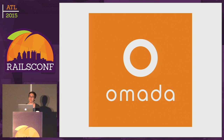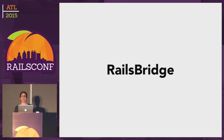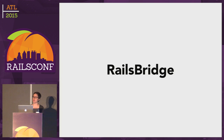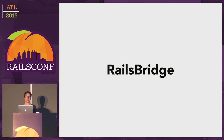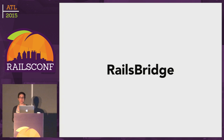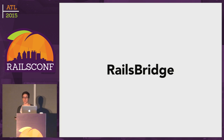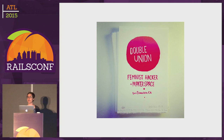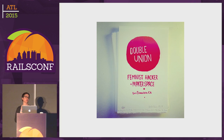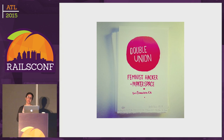When I'm not thinking about things at Omada, I'm usually thinking about RailsBridge — an organization that puts on free weekend workshops to help make the Ruby community more diverse. We maintain a set of open source curriculums and an event management app called BridgeTroll. I'm currently the chair of the board. And when I'm not thinking about Omada or RailsBridge, I'm usually thinking about DoubleUnion, a feminist hacker maker space in San Francisco where I'm the CTO, and I maintain our membership application and management app.